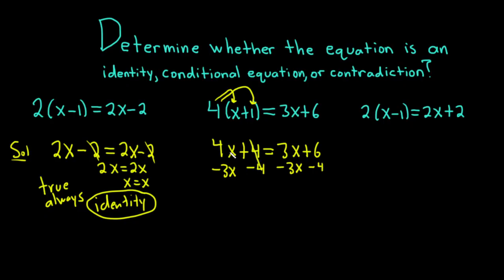These cancel. 4x minus 3x is just x. That's equal to, these cancel, and then 6 minus 4 is 2. The answer is 2, and so it's only true for 2. So it's true for x equals 2, but no other real numbers.